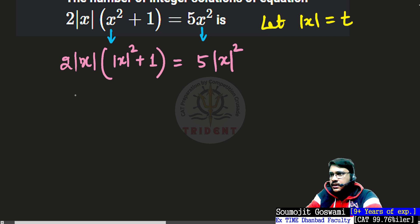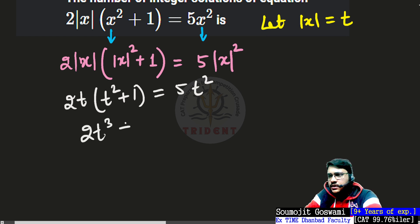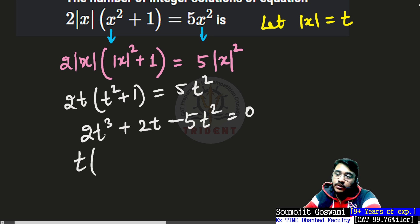So this is 2 times t plus t square plus 1 equals 5t square. This is 2t cubed plus 2t equals, or let me take the 5t to this side, 2t cubed minus 5t square plus 2 equals 0. Let's take t common throughout.